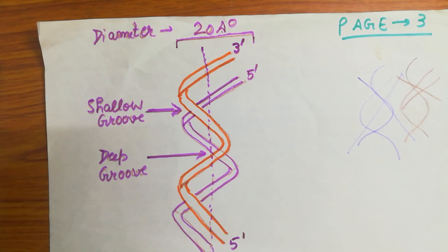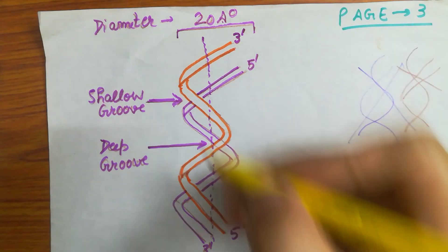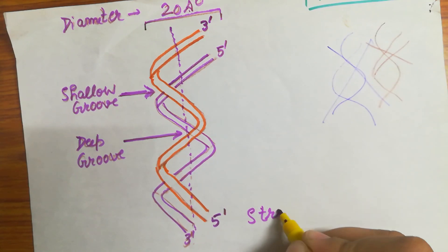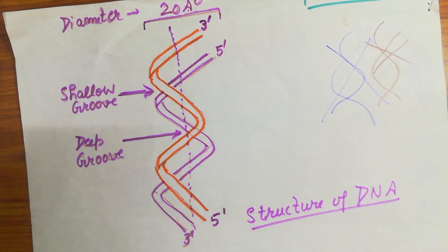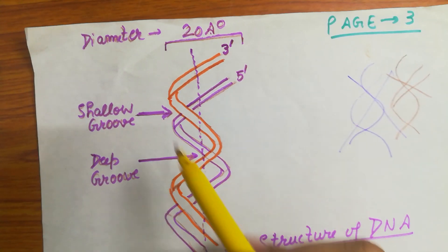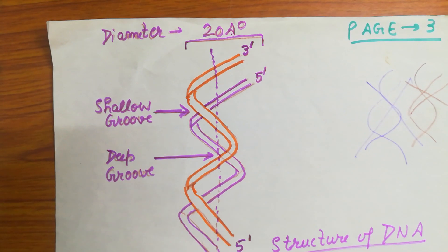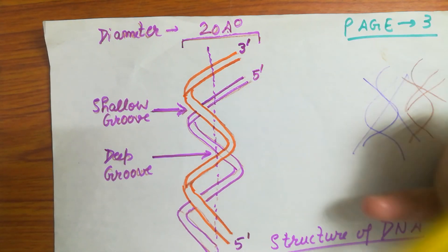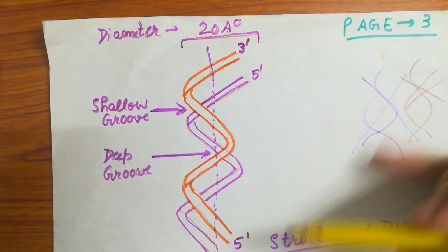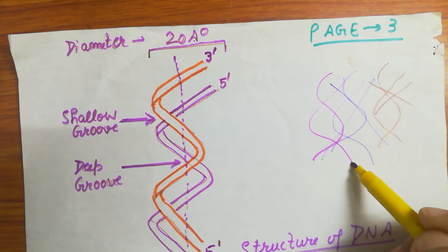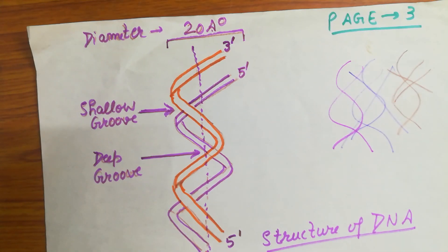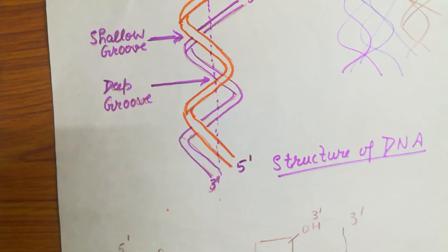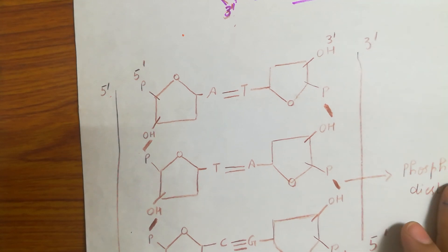In our last video I discussed the structure of DNA - how it looks. The backbone is made up of pentose sugar as well as phosphoric acid or phosphate. The diameter is 20 angstroms and it has two grooves: shallow and deep. The two strands are antiparallel to each other - 3' to 5' and 5' to 3'. It is coiled in a right-hand manner; this is the correct way to draw it.